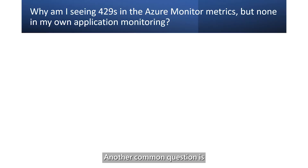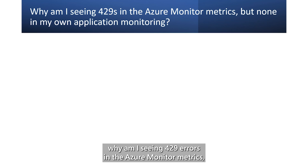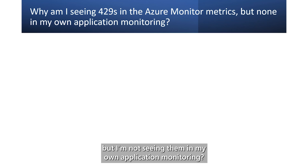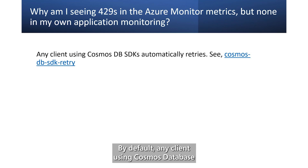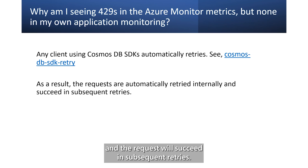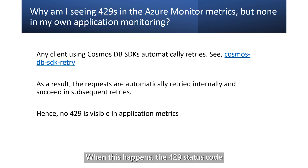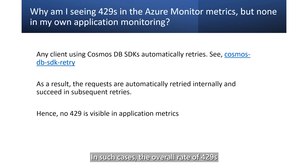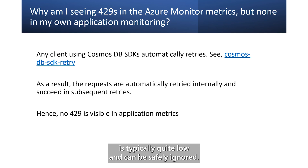Another common question is: why am I seeing 429 errors in the Azure Monitor metrics, but not in my own application monitoring? By default, any client using Cosmos database software development kits will automatically retry despite the 429 errors, and the request will succeed in subsequent retries. When this happens, the 429 status code is not returned to the application. In such cases, the overall rate of 429s is typically quite low and can be safely ignored.